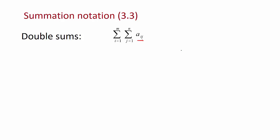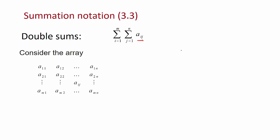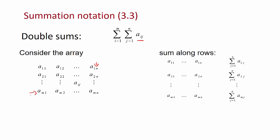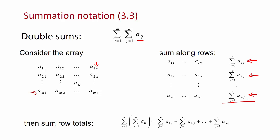We could think of these elements in terms of an array, where j is the number of columns and i is the number of rows. So here we have a₁₁ as the first element, n columns, and m rows. What we can do then is to sum along the rows, so at the end of each row we'll have a row total — going from j equals 1 to n for each row — then sum up these m row totals.